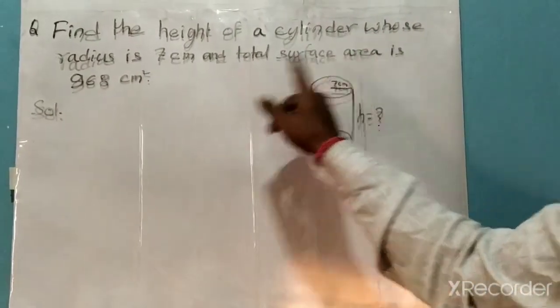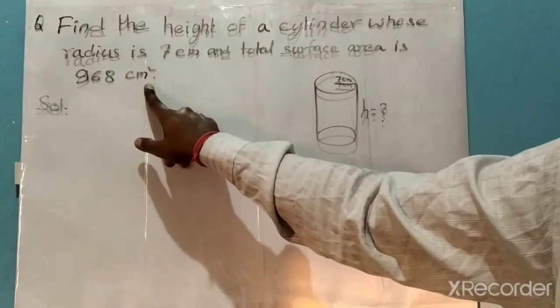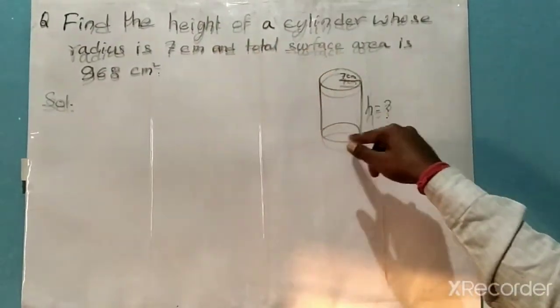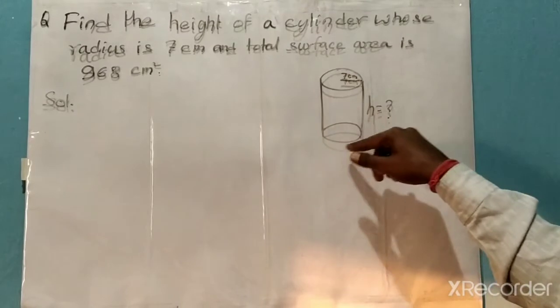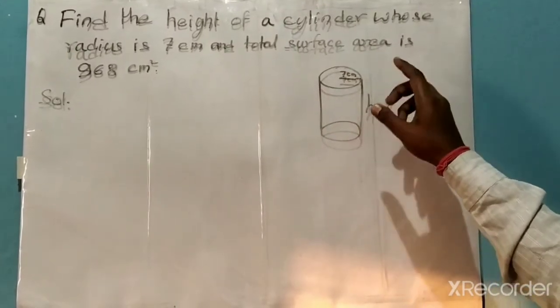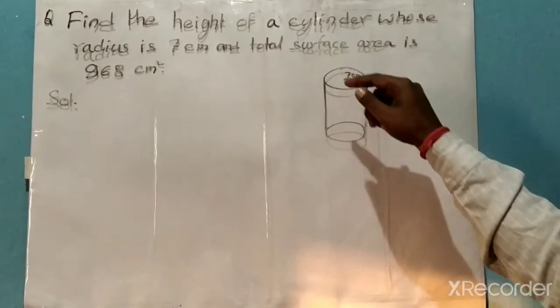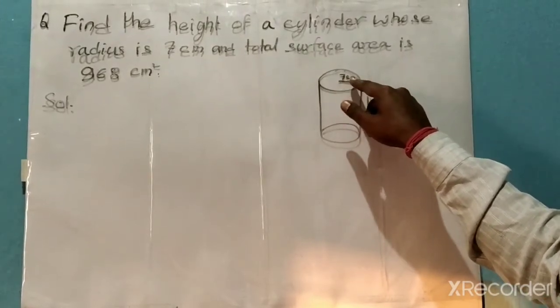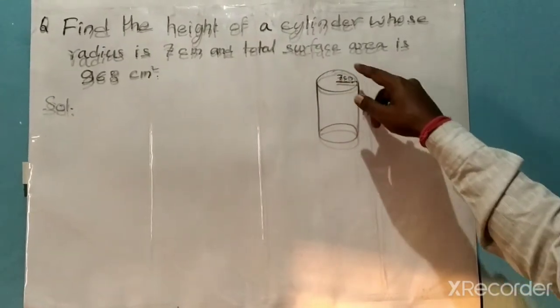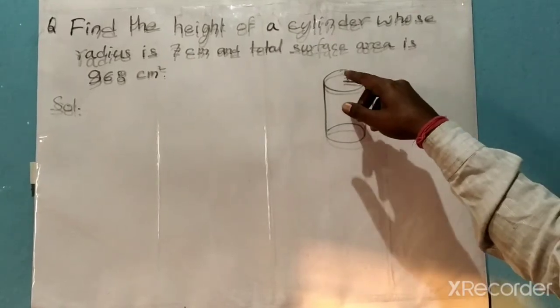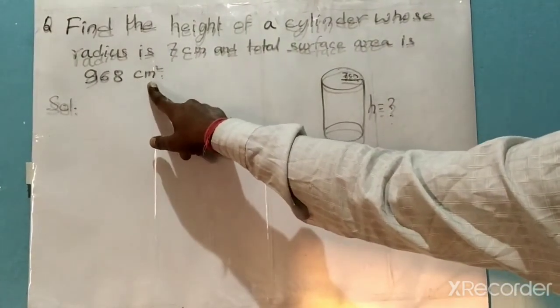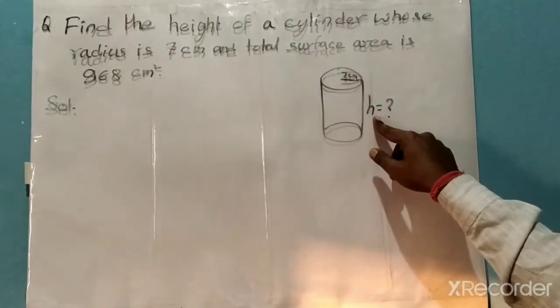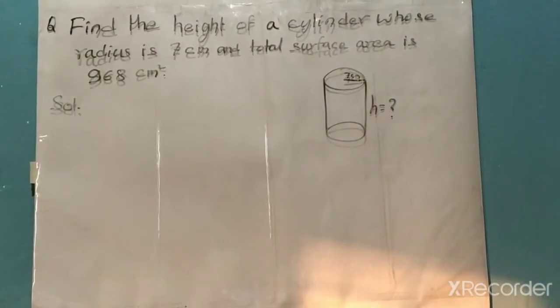I have drawn this cylindrical shape for your convenience. In the question, it is given that the radius of this cylinder is 7 centimeters and the total surface area is 968 square centimeters. We have to find the height. Please watch the video till the end so the concept will be clear.